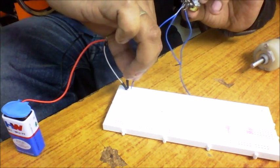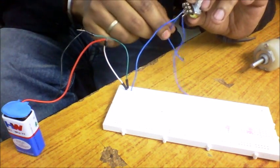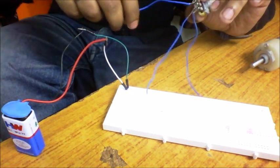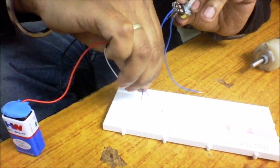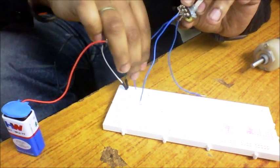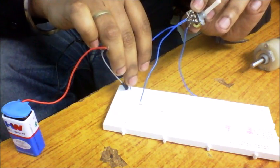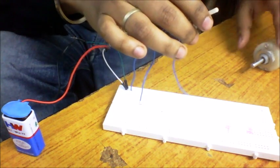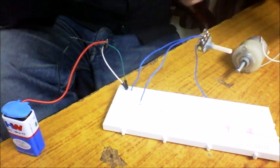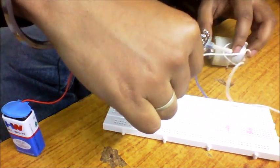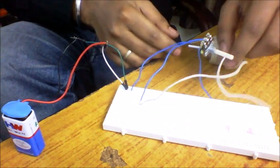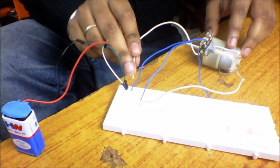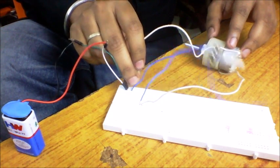Positive side of the battery and any one of the side of the potentiometer will go to the motor. It will connect in series with the motor. One terminal will go to the positive side and other side will go to the negative of the battery.